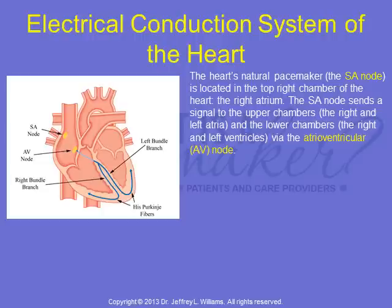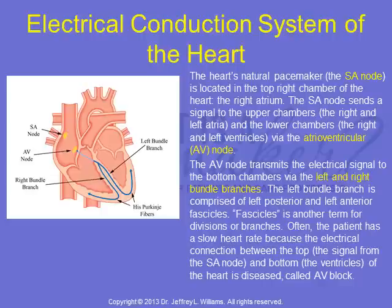The sinoatrial node sends a signal to the upper chambers, the right and left atria, and the lower chambers, the right and left ventricles, via the atrioventricular or AV node. The AV node transmits the electrical signal to the bottom chambers via the left and right bundle branches. The left bundle branch is comprised of left posterior and left anterior fascicles. Fascicles is another term for divisions or branches.